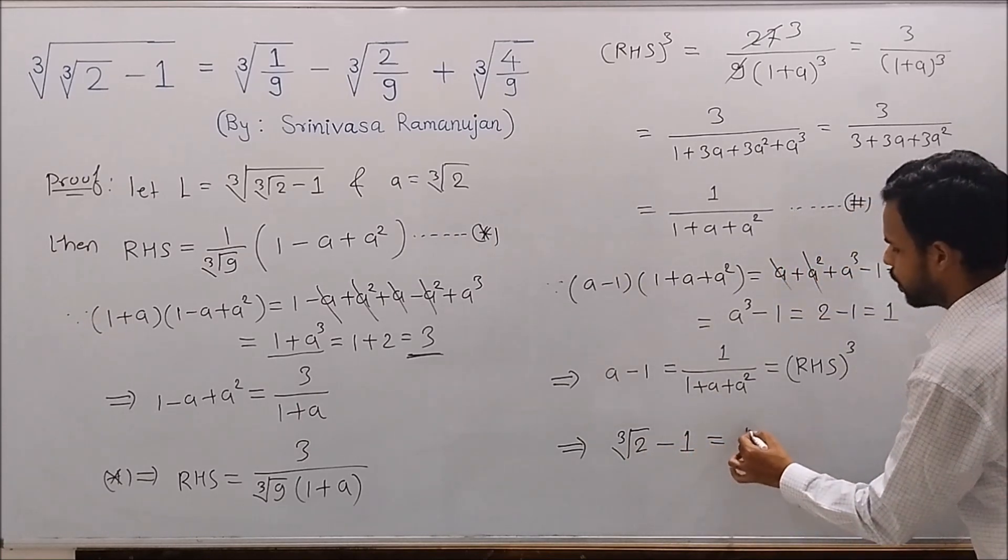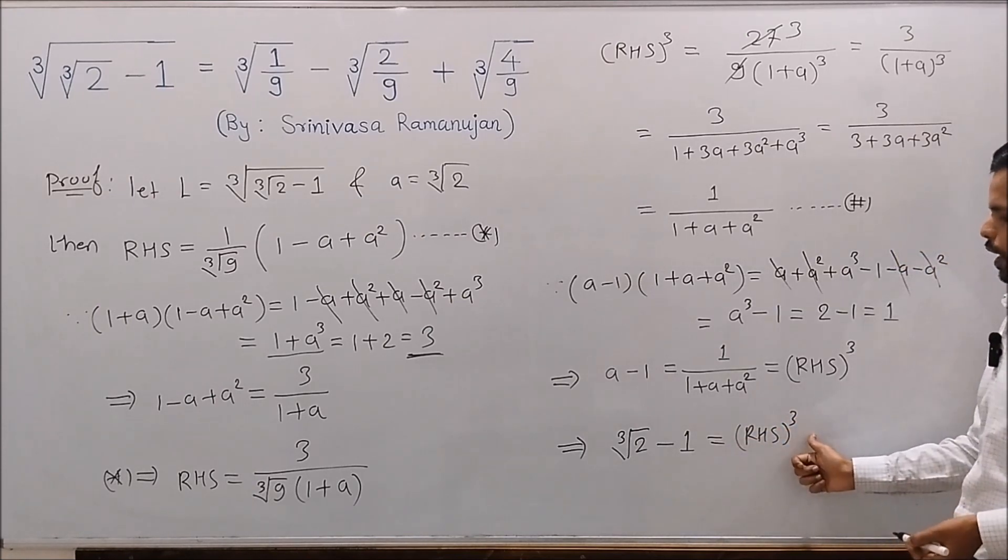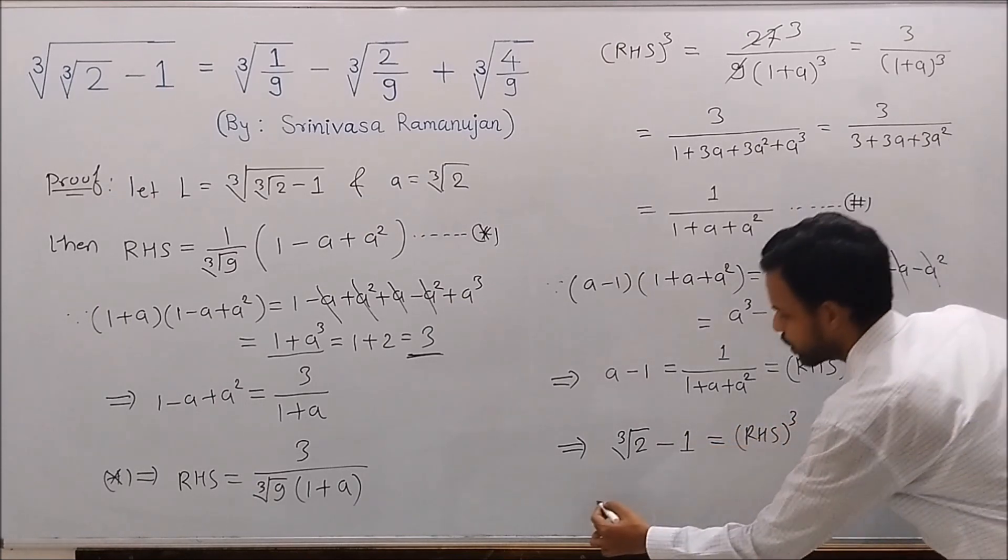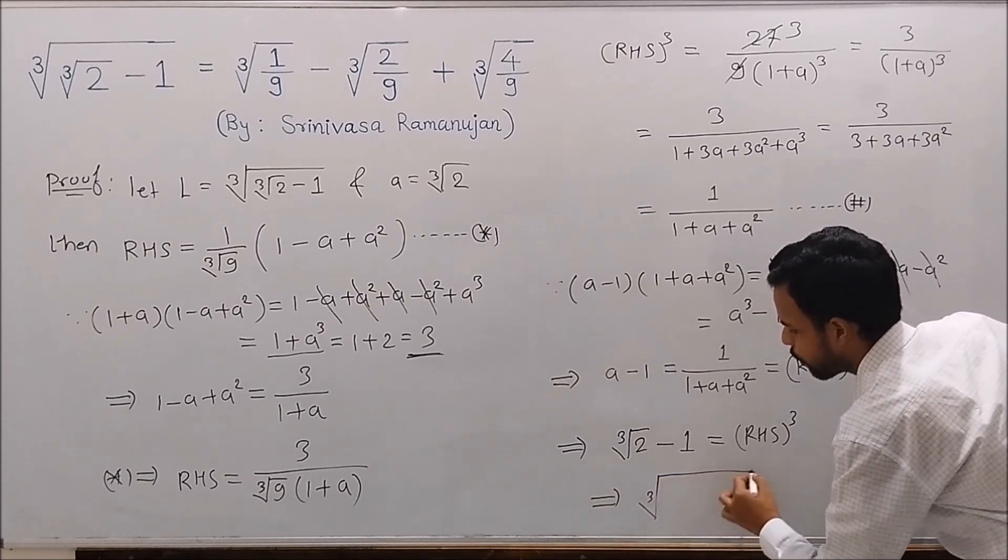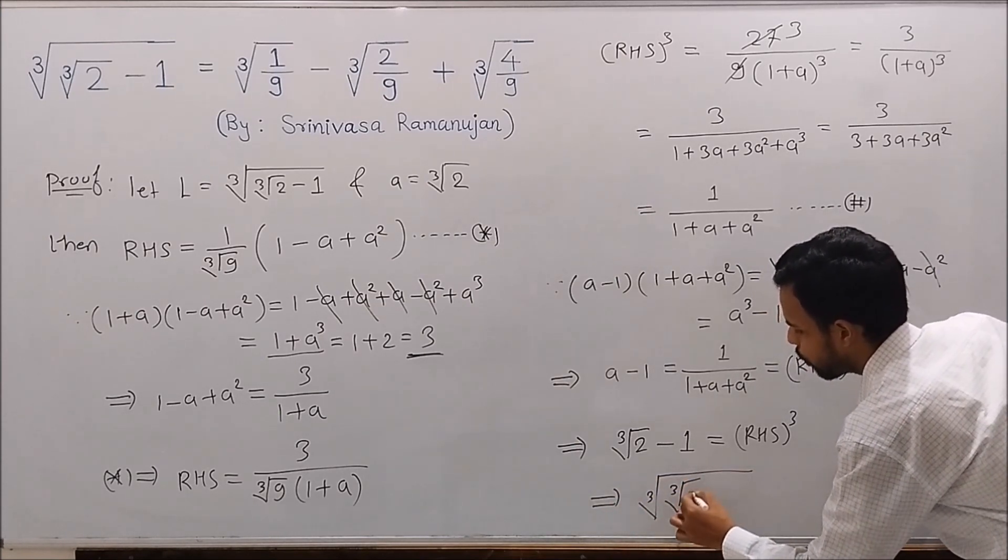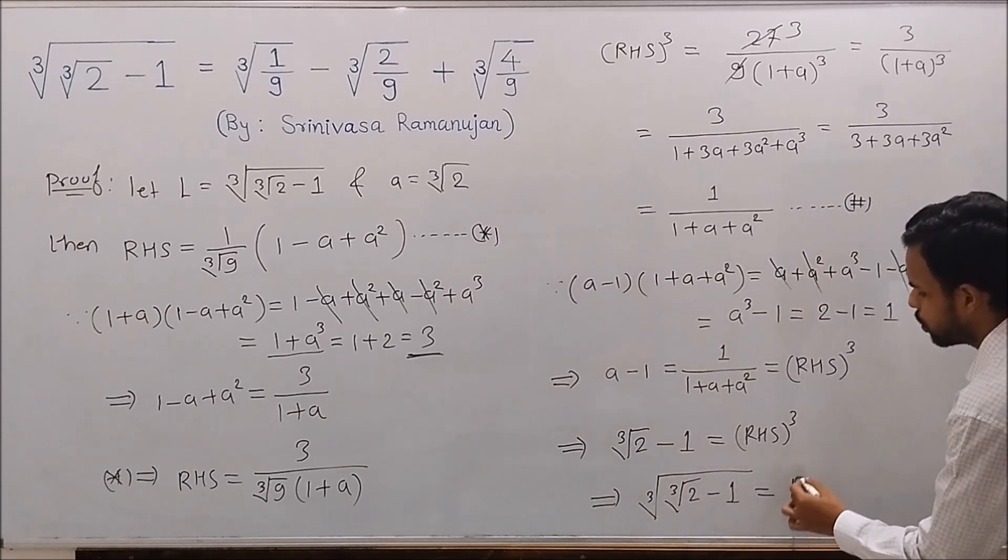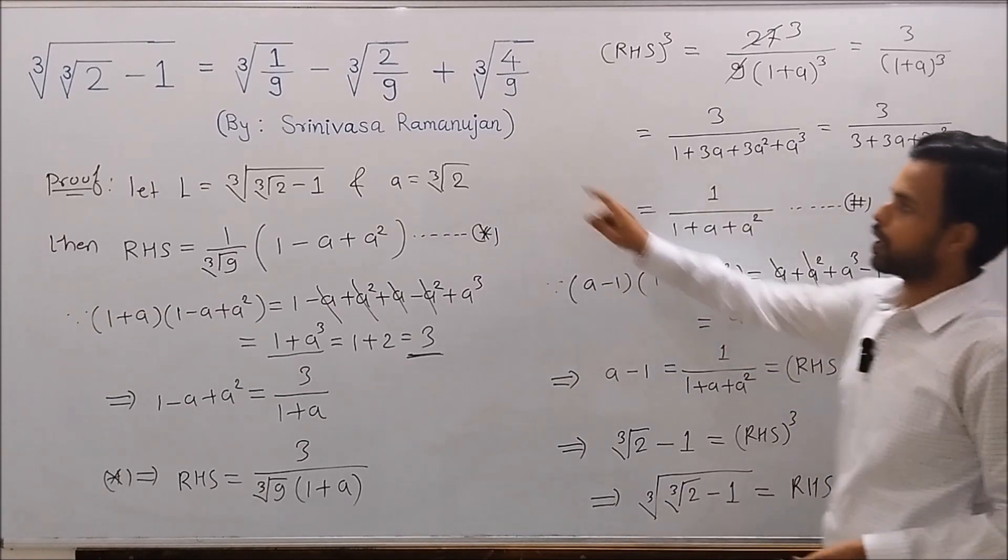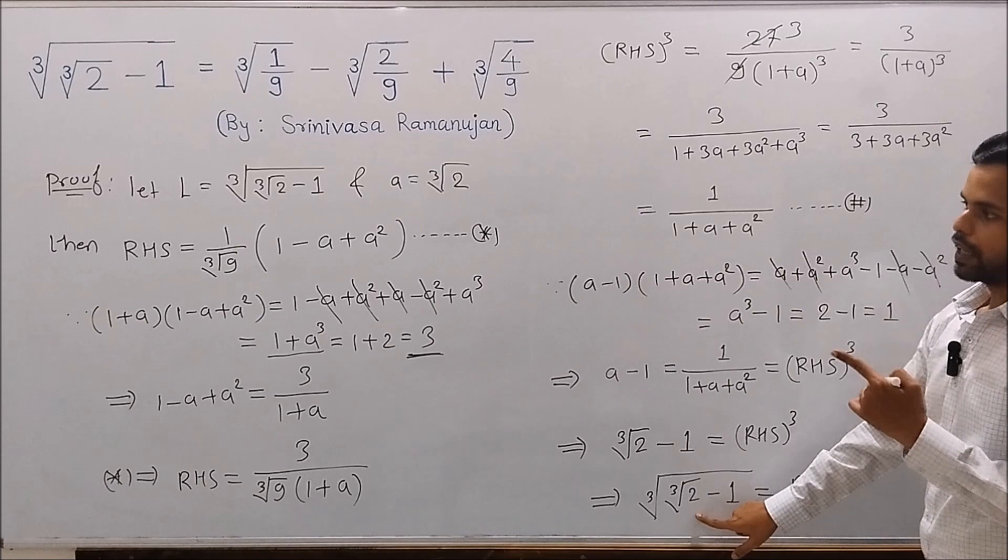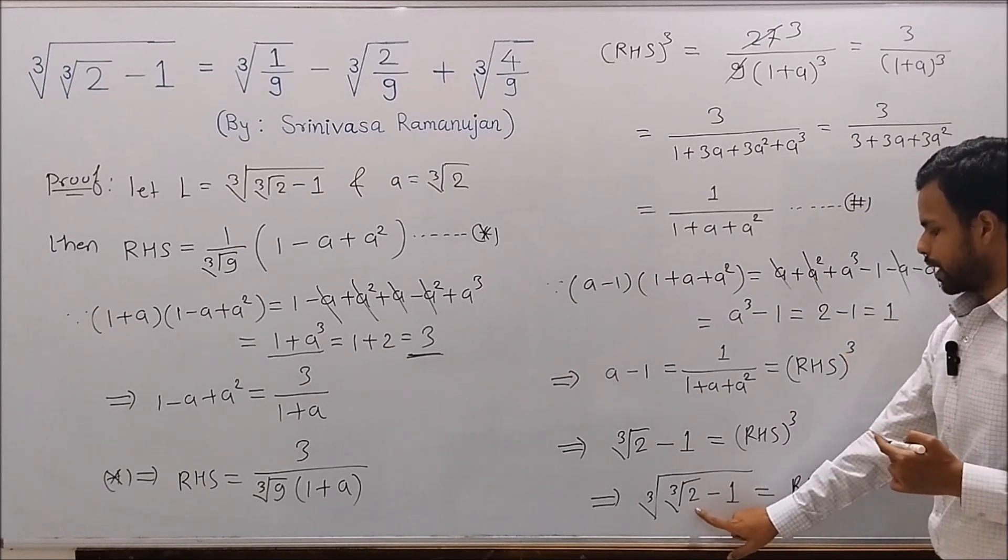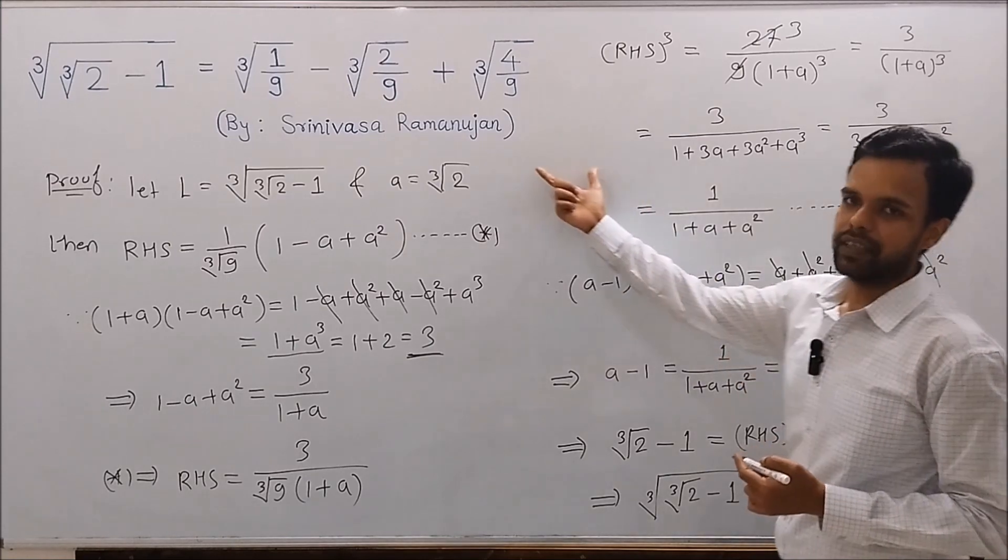So cube root of cube root of 2 minus 1 equals the right-hand side, which is nothing but the left-hand side L. So left-hand side equals right-hand side, thus proving the identity.